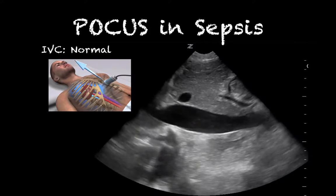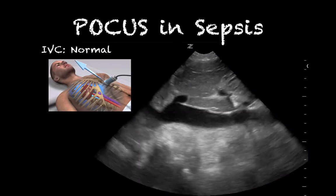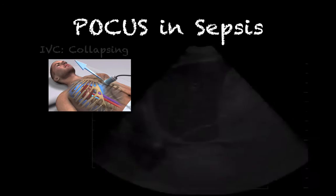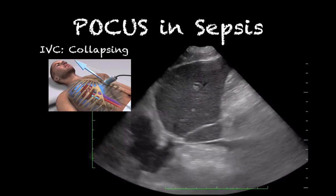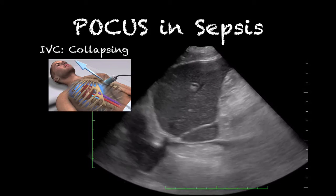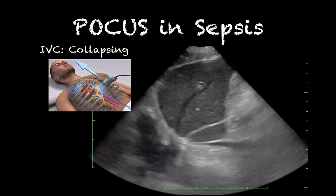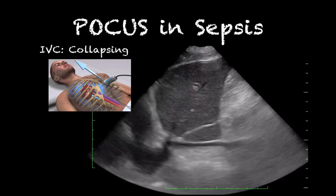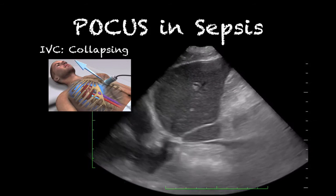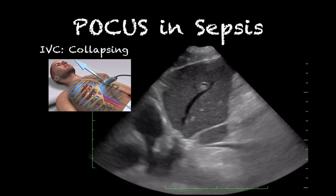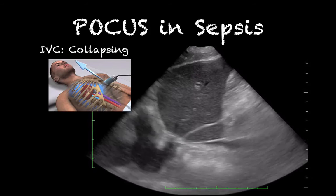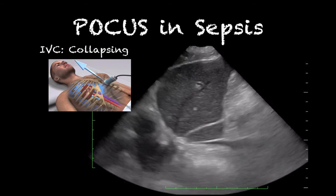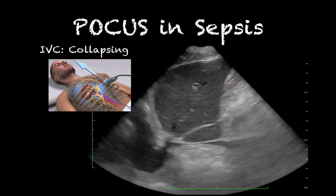In contrast, here we see a collapsing IVC. Systemic vasodilation means less blood in the IVC, so it appears flat and collapses more than 50 percent with respiration, or completely, as in this image. This is often seen in the hypotensive patient with septic shock.